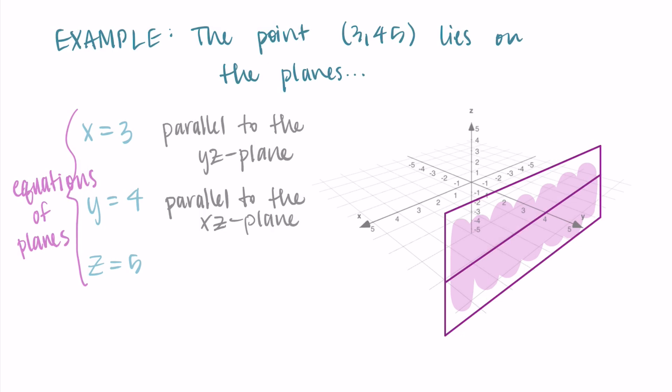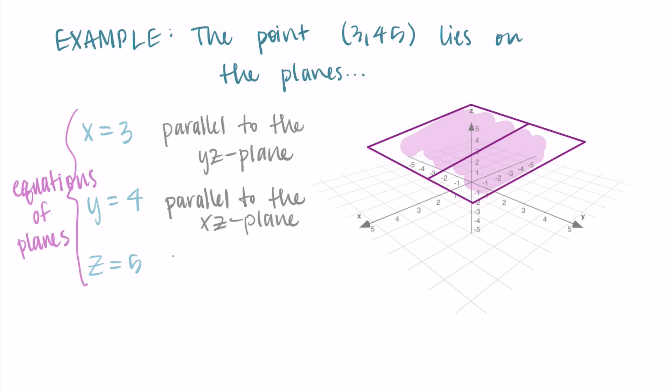And then lastly, for z equals 5, this is sort of our plane that is parallel to the xy plane to the floor on our graph. And so it's up here at z equals 5. This one's, I think, the hardest to draw. And so our point would also be in this plane.